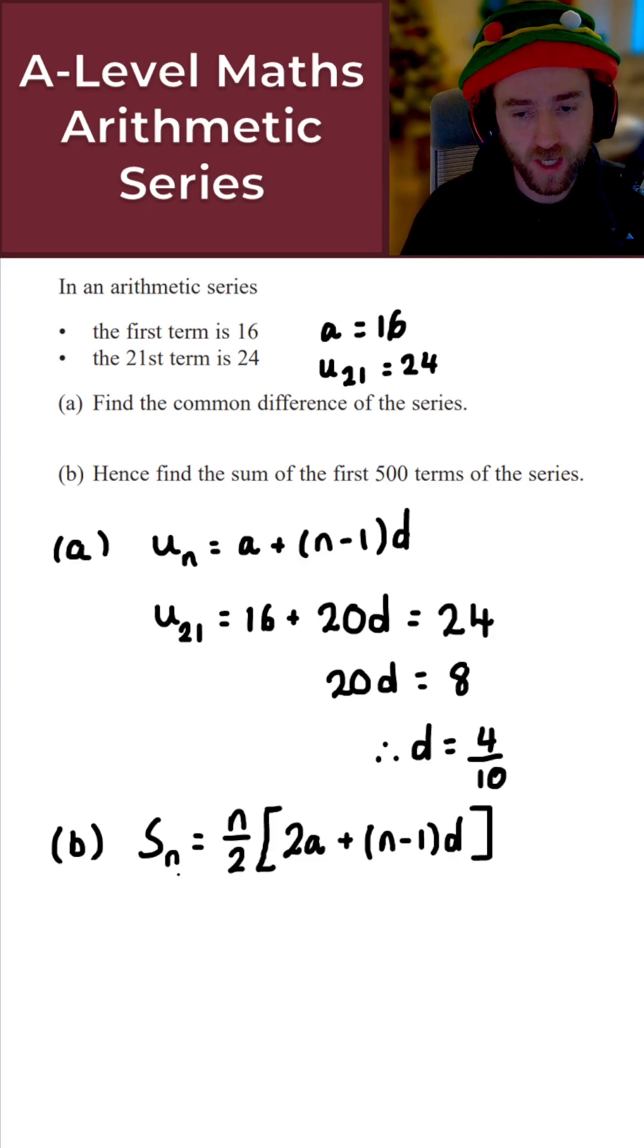For the sum of the first n terms of an arithmetic series, don't forget that we use this result: Sₙ is equal to n over 2 times 2a plus n minus 1 times d.